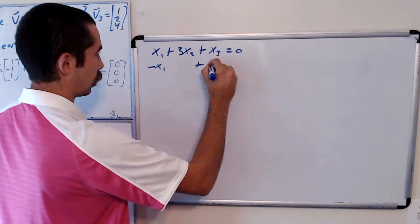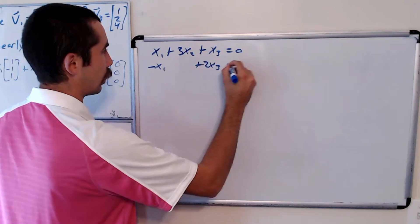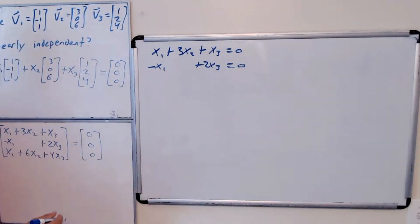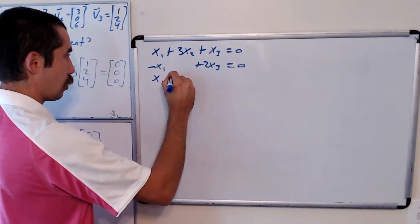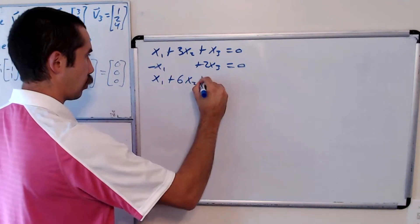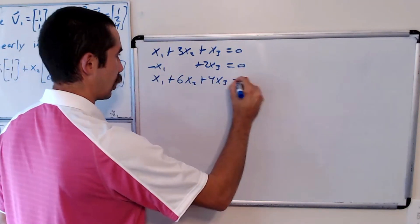x1 plus 2x3 equals 0, and x1 plus 6x2 plus 4x3 equals 0.